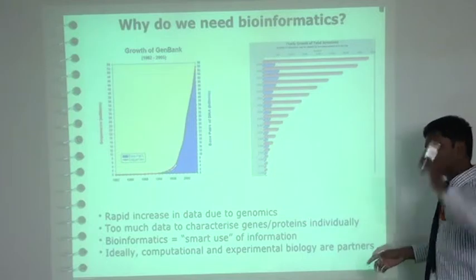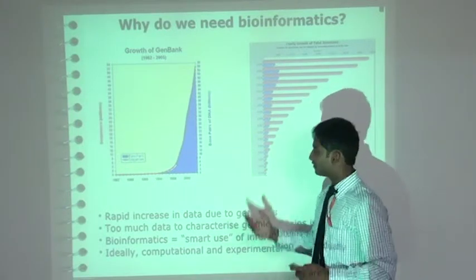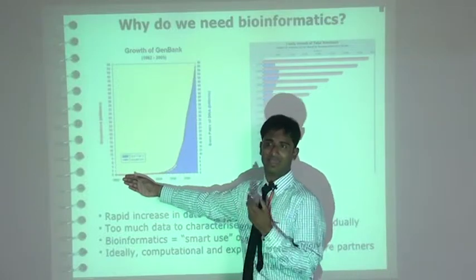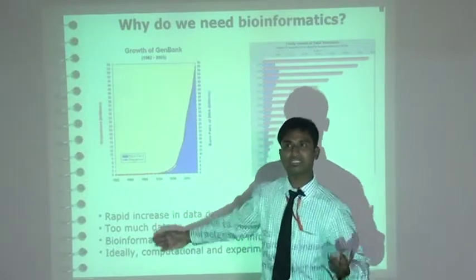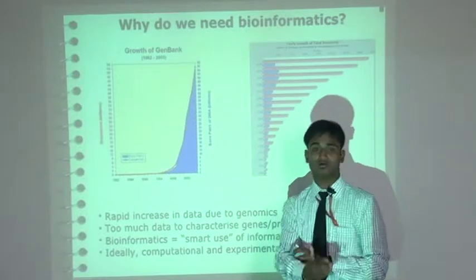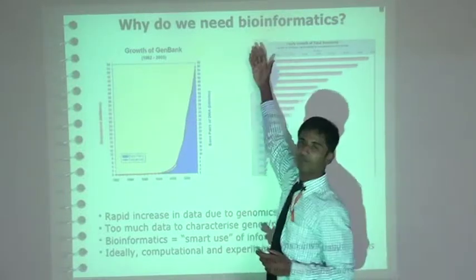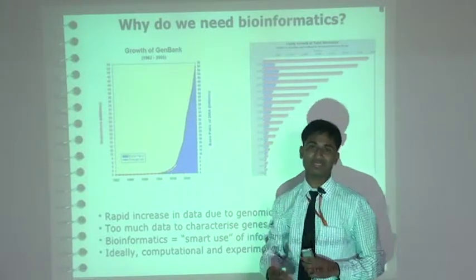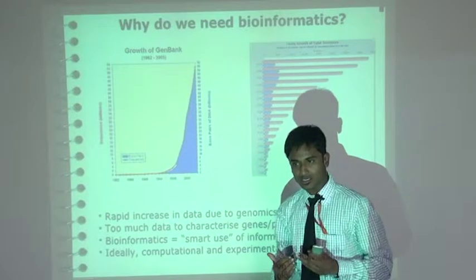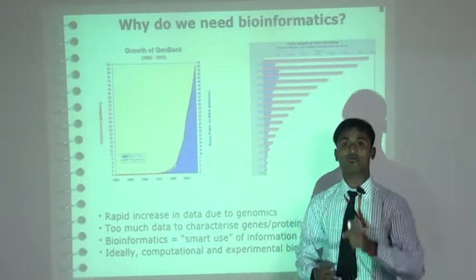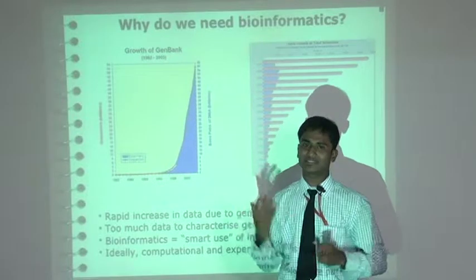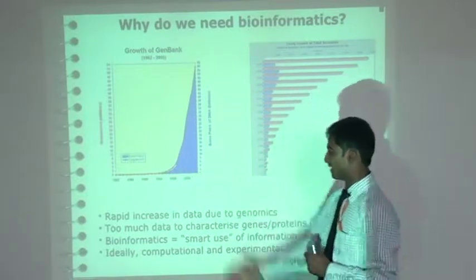Why do we need bioinformatics? Before 1965-1970, the ratio of research was very slow — only around 8, 9, or maybe 20 papers published per year. But after bioinformatics evolved, the number of papers and the growth of research increased by 10 to even 100 times. Now, more than 8,000 papers are published in one year. This graph shows that the rate of discoveries continuously increased because of bioinformatics.